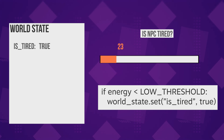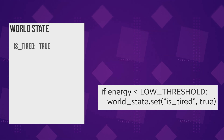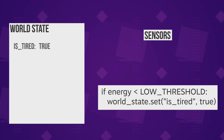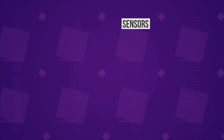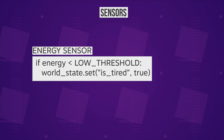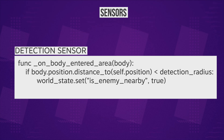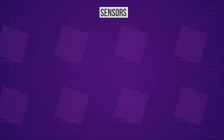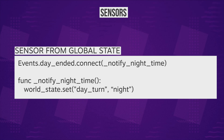Your world state will be a simplified projection, and the pieces of logic that keep this projection up to date are called sensors. You can have sensors inside your NPC to check for energy and health, areas to detect if the player is nearby, and sensors connected to the global state — for example, to check if it's night or day.